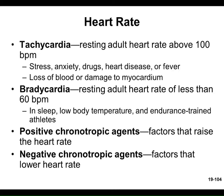The term chronotropic: 'chrono' means time, 'tropic' means influencing. A positive chronotropic agent increases heart rate — for example, caffeine. A negative chronotropic agent decreases heart rate. The sympathetic nervous system has a positive chronotropic effect; the parasympathetic has a negative chronotropic effect on the heart.